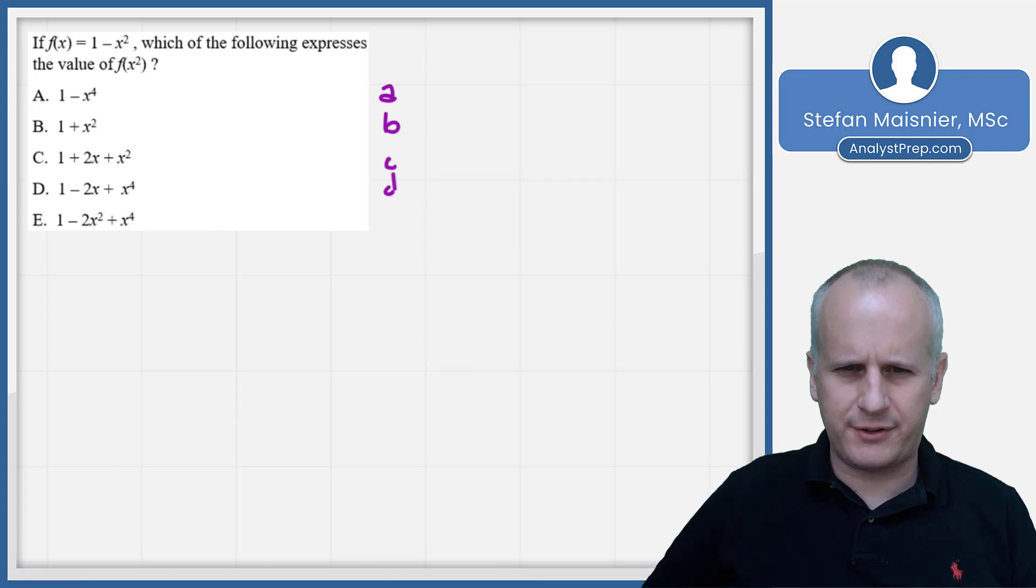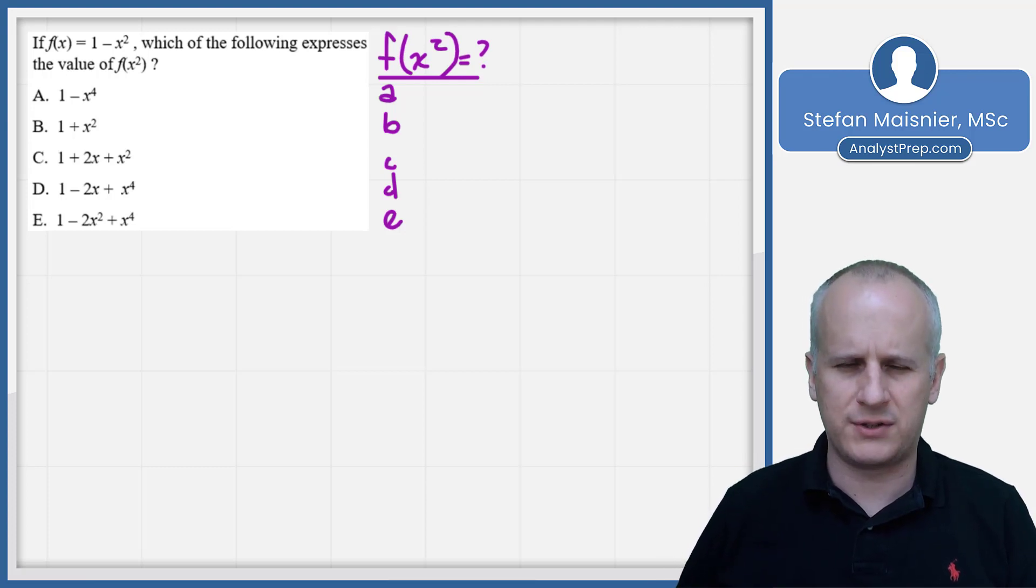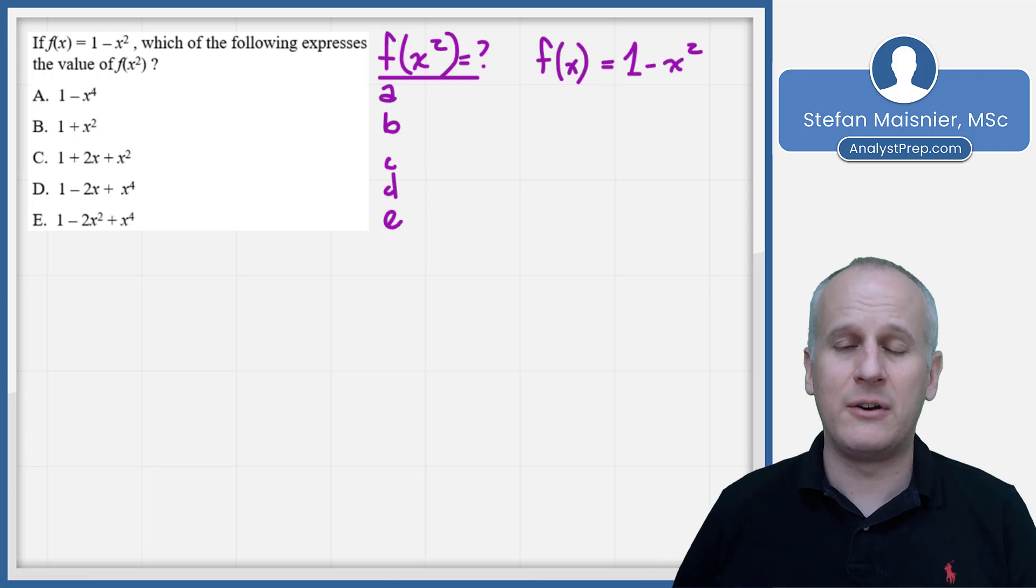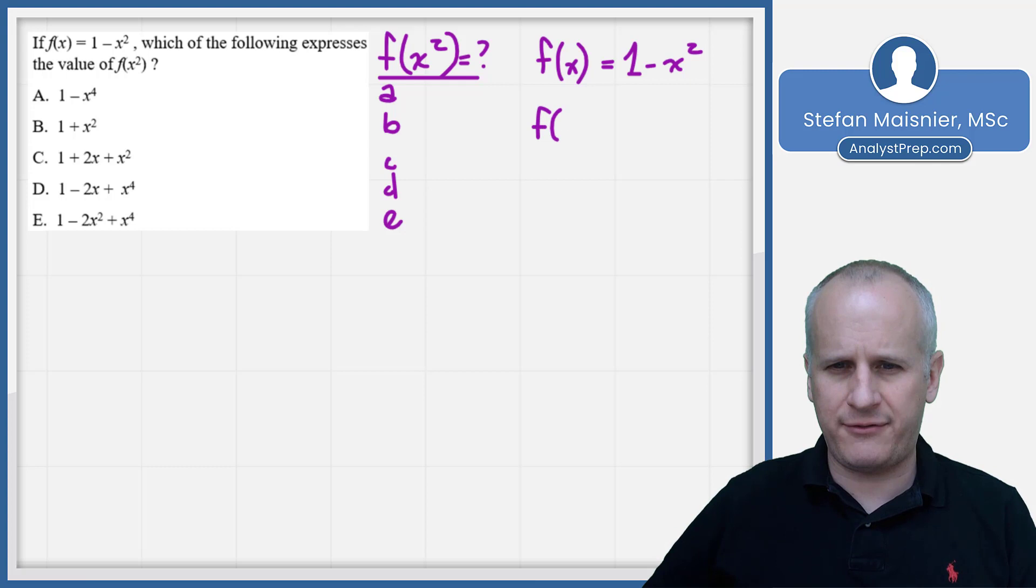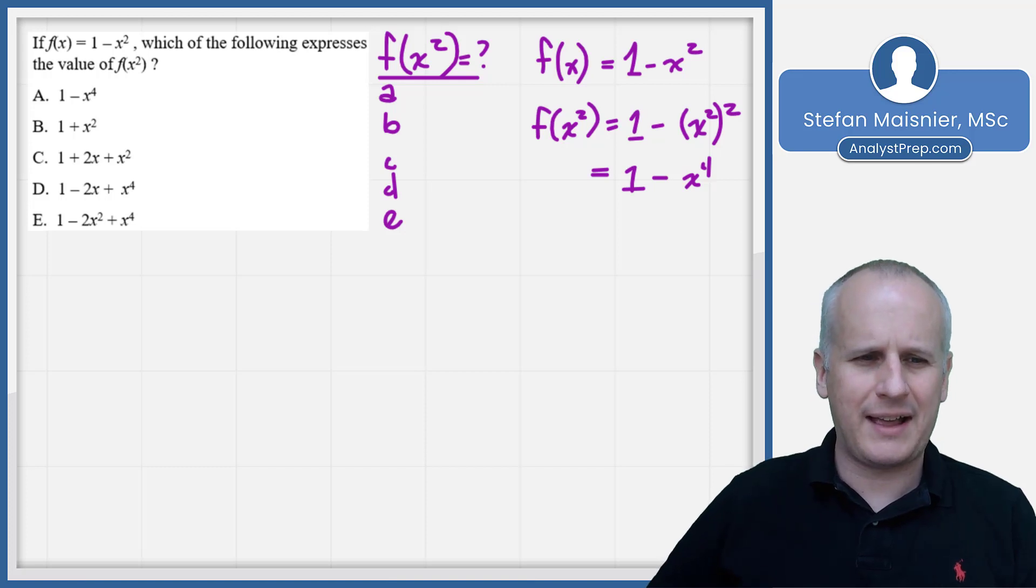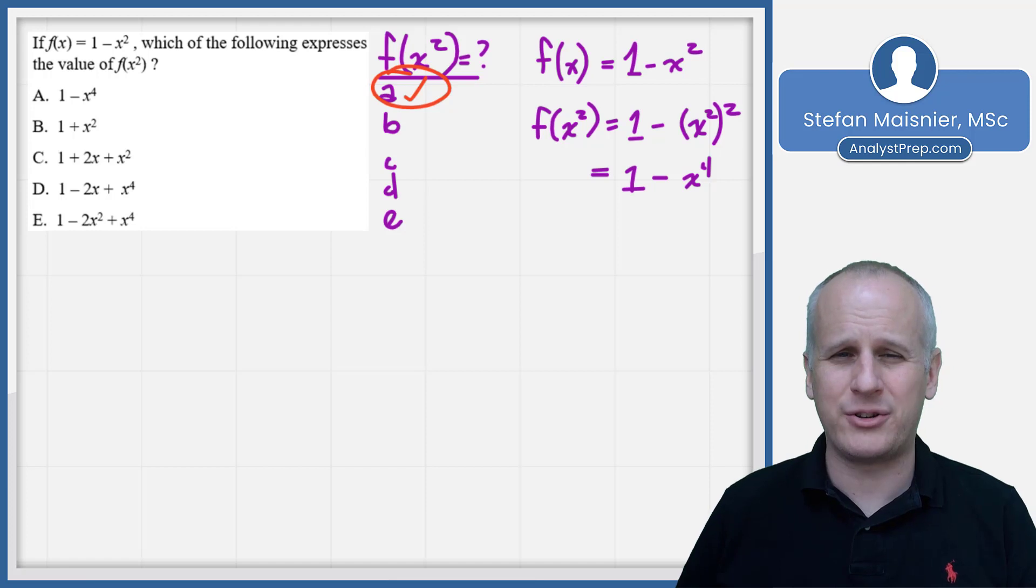As always, we'll set up our scratch work first, giving the answer choices a through e, and we're being asked for the value of f of x squared. I probably would not recommend writing out the little expressions to start. The problem itself says f of x is equal to 1 minus x squared. Now if you were confident in technically manipulating these types of expressions, you might be able to see that f of x squared just means that we're going to have 1 minus x squared, squared, which when we process that through allows us to get a result of 1 minus x to the 4th. You can see this can be an under 60 second question, even if the function begins as something unfamiliar to you.